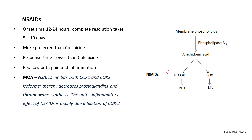NSAIDs are more preferred than colchicine due to their lower toxicity, though their response time is slower. To understand NSAIDs, we need to know the cyclooxygenase (COX) pathway: membrane phospholipid is converted to arachidonic acid by phospholipase A2, then to prostaglandins and leukotrienes via COX and LOX pathways respectively. NSAIDs inhibit both COX-1 and COX-2 isoforms, thereby decreasing prostaglandin and thromboxane synthesis.